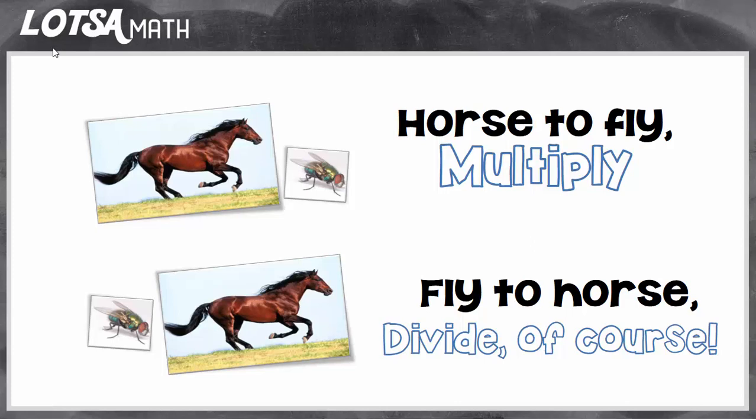So remember the strategy horse to fly, multiply, or fly to horse, divide of course. We're going to use the same thing, but we're going to add yards in with our feet and our inches. So now yards would always be the biggest, and inches would still be the smallest.